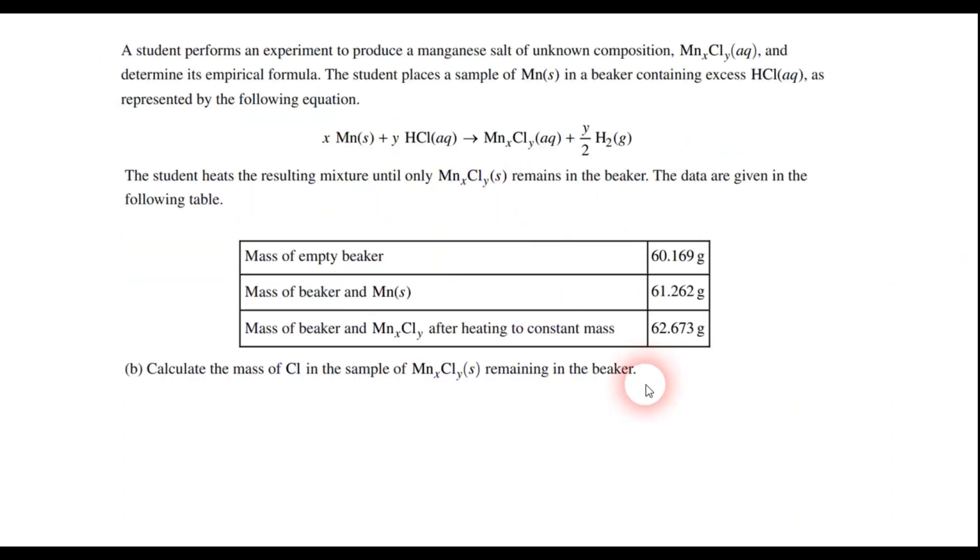Going on, we have a laboratory question. It says we have the mass of an empty beaker as 60.169 grams, the mass of the beaker with some manganese reactant as 61.262 grams, and the mass of the beaker with the product, the chloride, is 62.673 grams. The question says calculate the mass of chlorine in that sample. So a couple things we have to do.